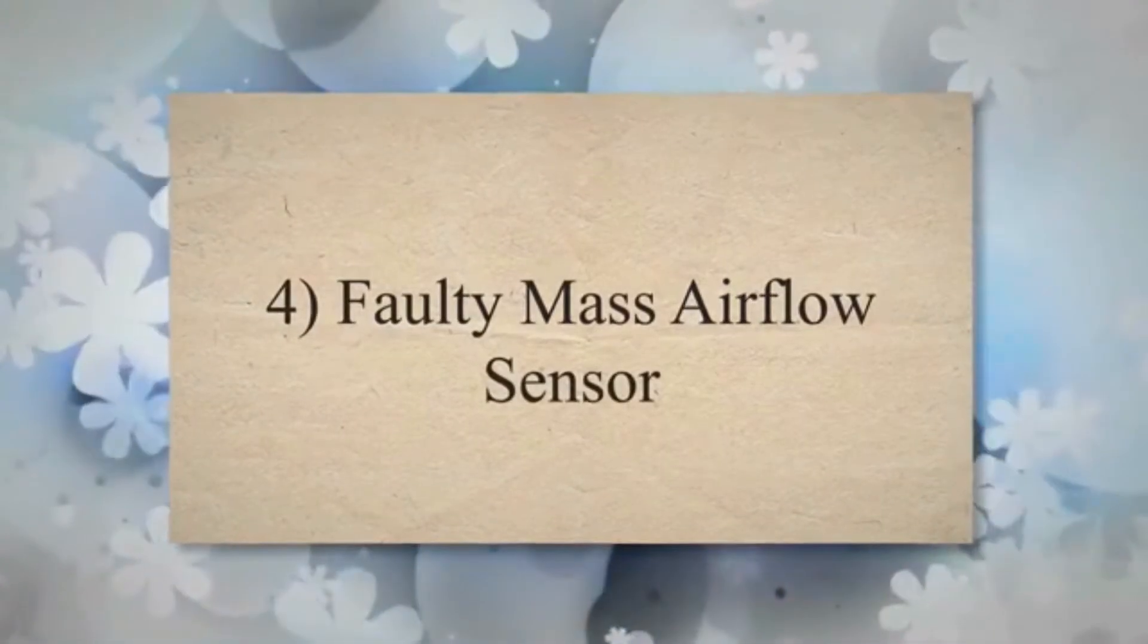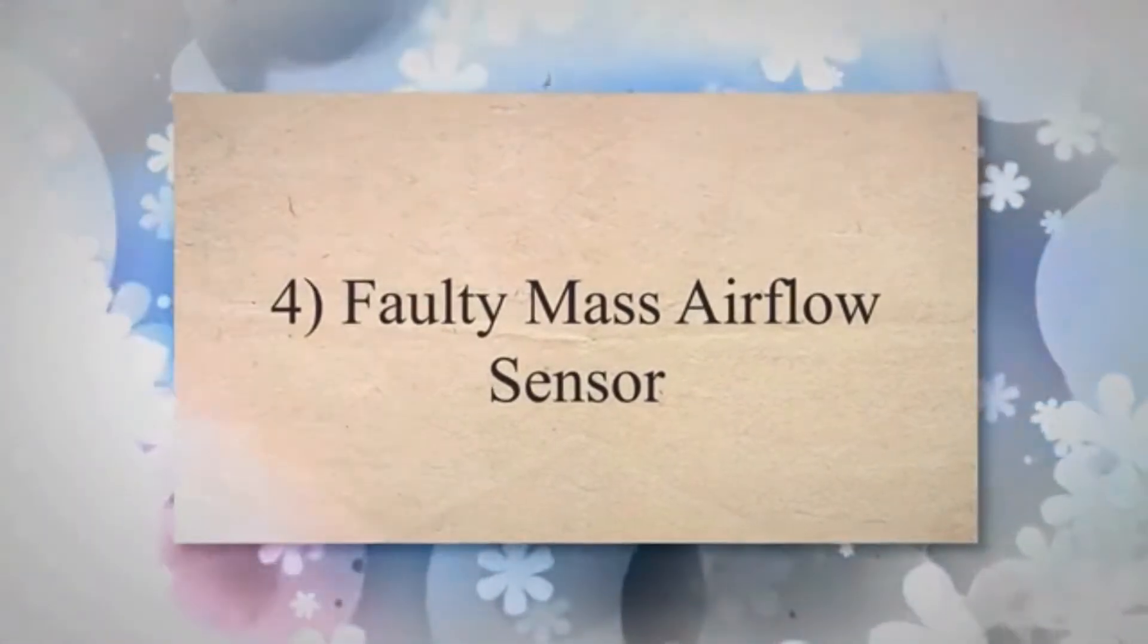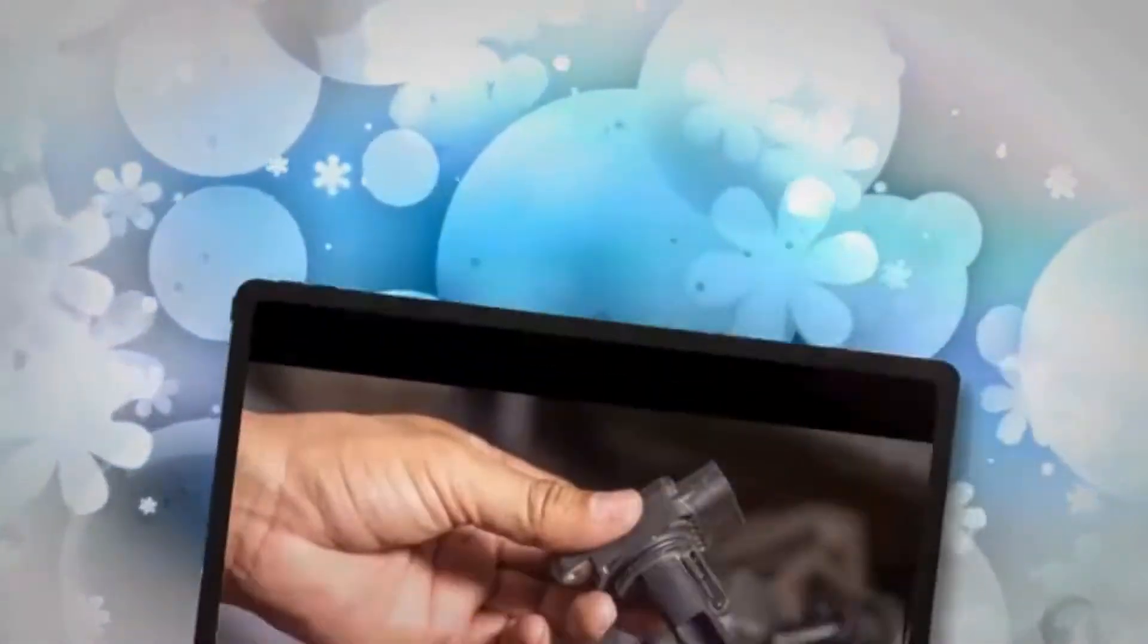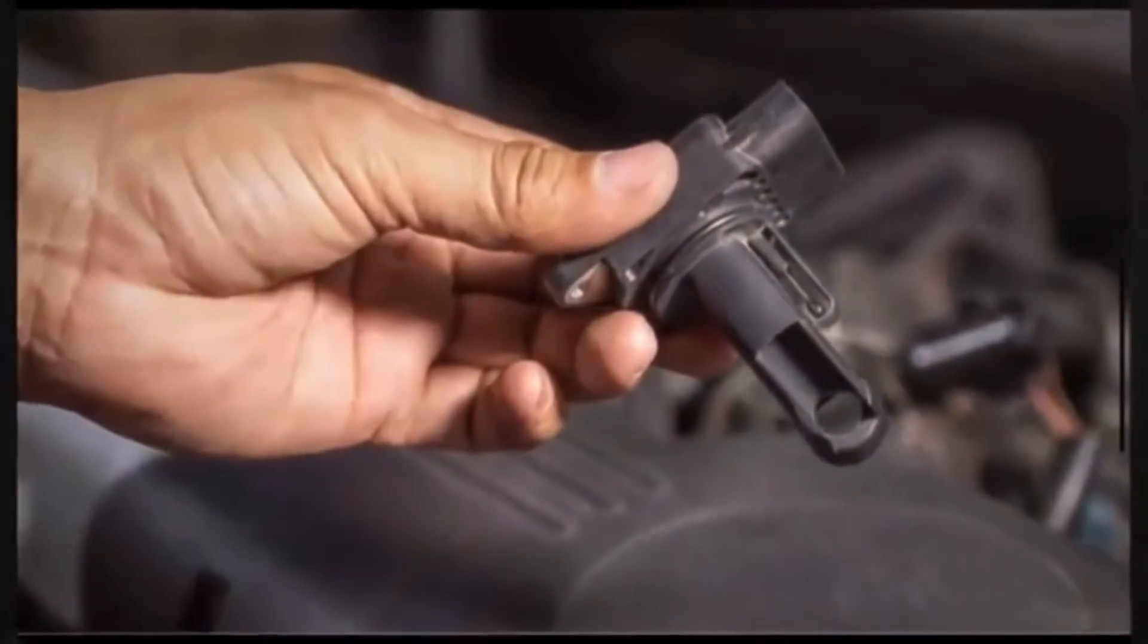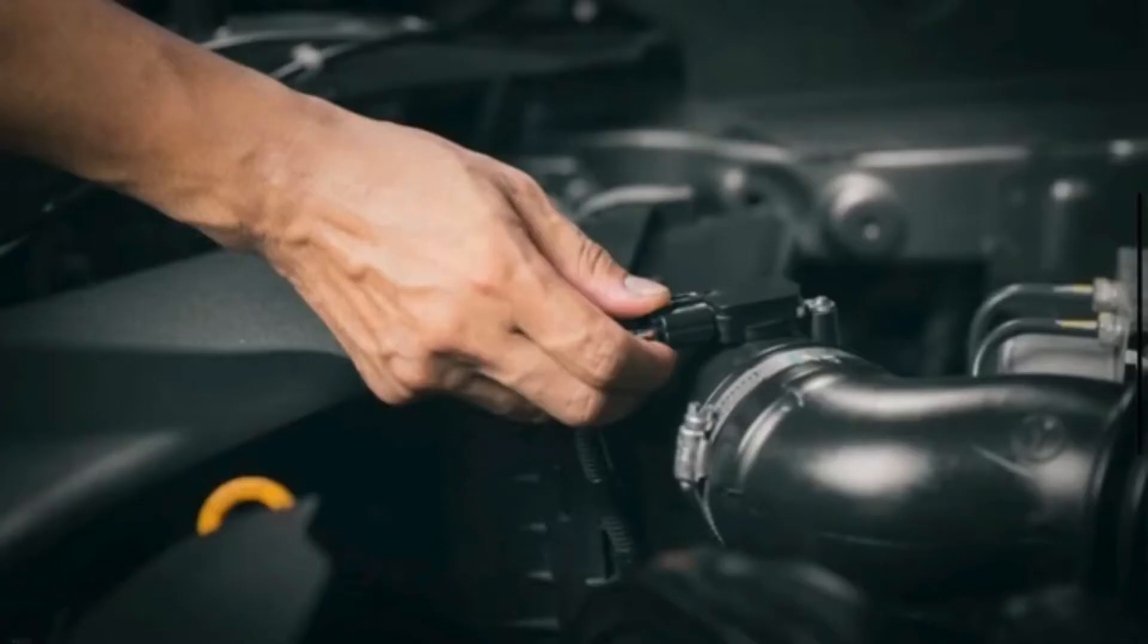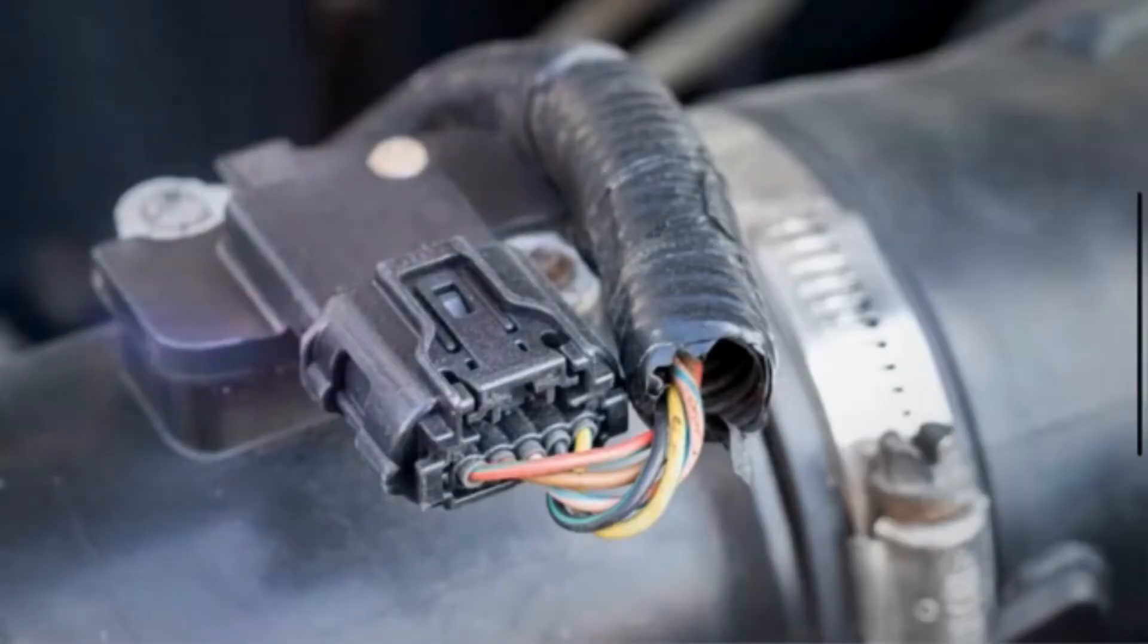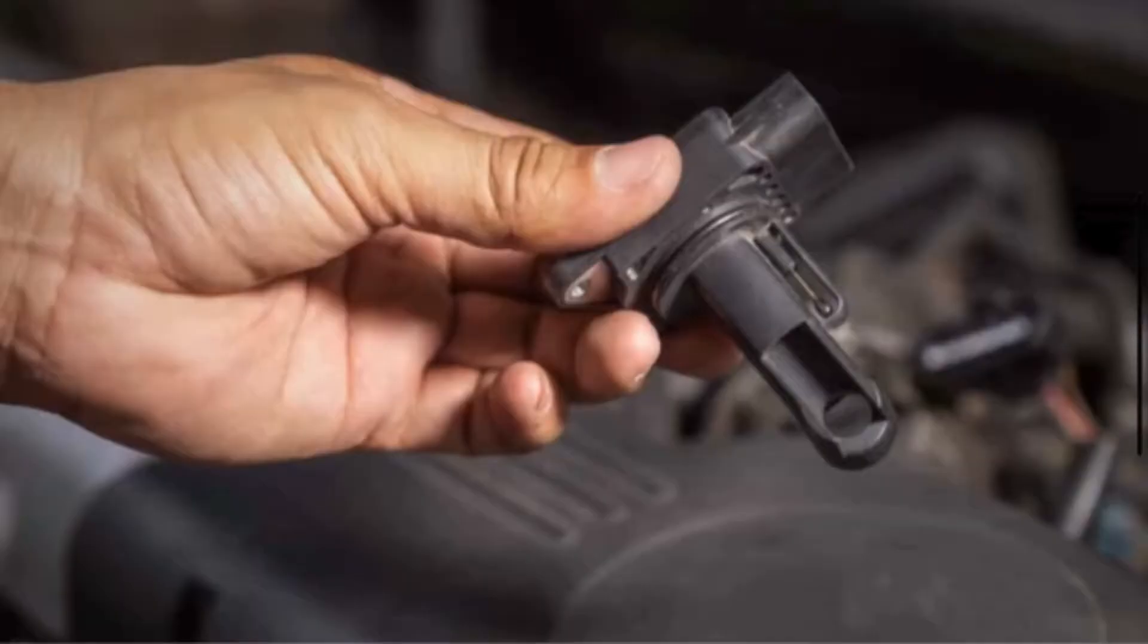4. Faulty Mass Airflow Sensor. The MAF sensor measures the amount of air entering the engine. It also helps the ECM determine the proper air-fuel mixture. A faulty MAF sensor can cause an incorrect air-fuel mixture, which may affect the catalytic converter's performance.